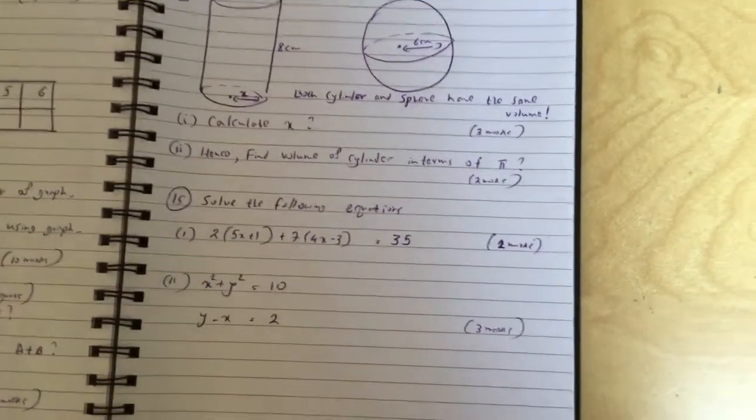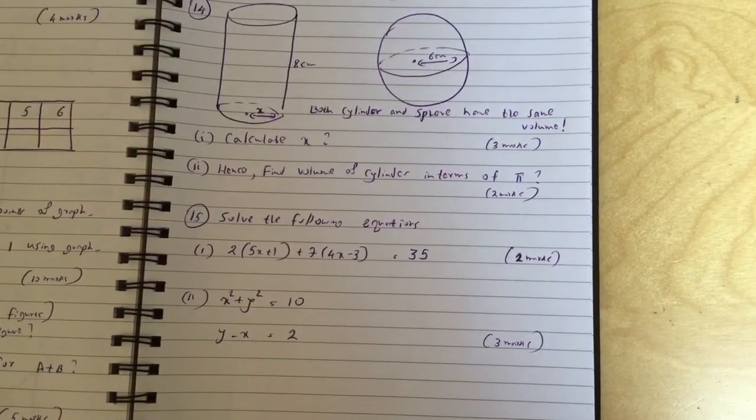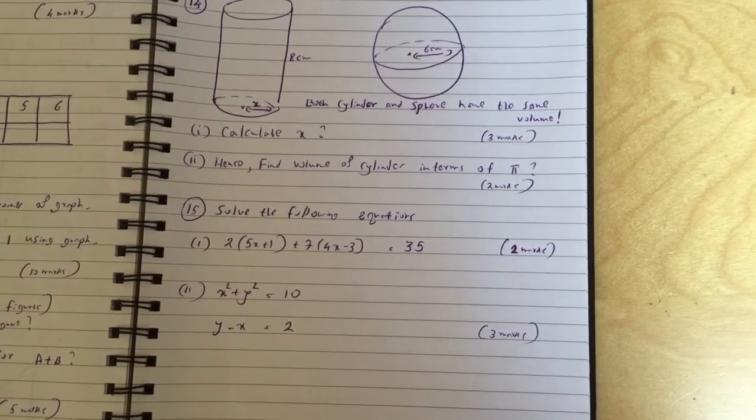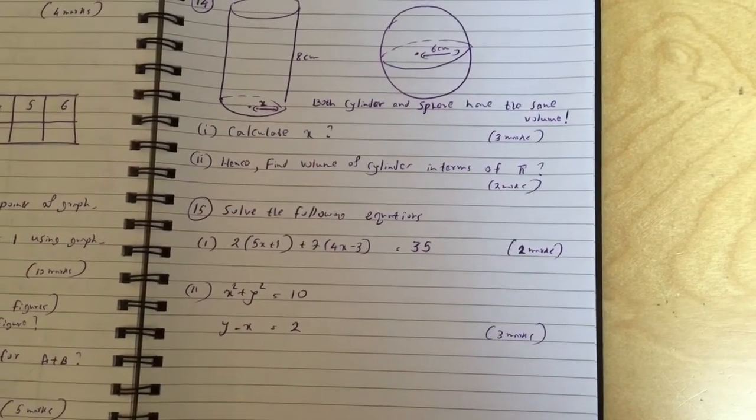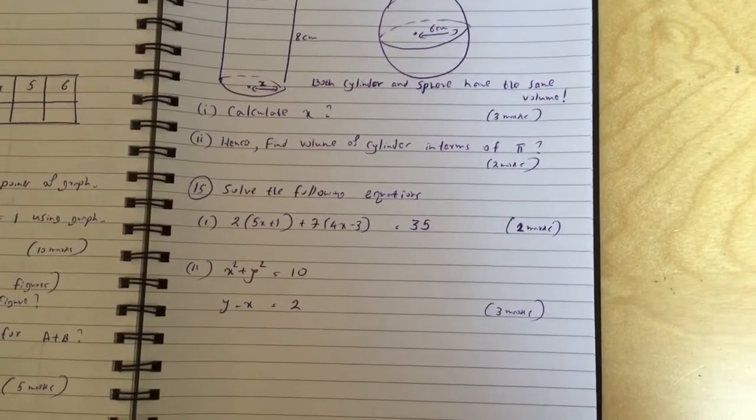Question 15: Solve the following equations. Part 1: 2 bracket 5x plus 1 plus 7 bracket 4x minus 3 equals 35. Part 2: x squared plus y squared equals 10 and y minus x equals 2.